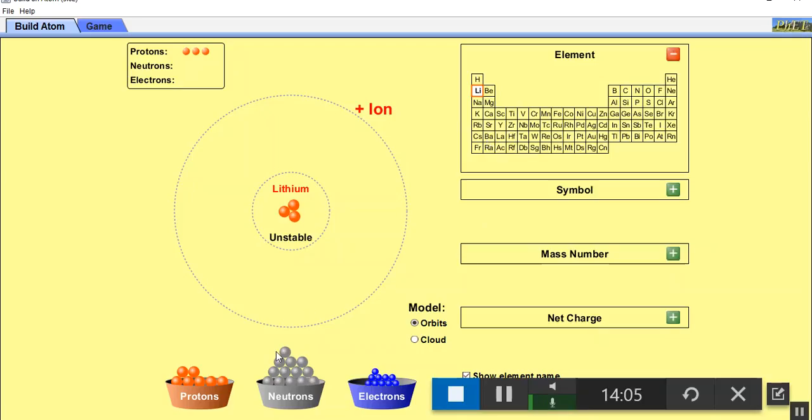If I add a neutron to lithium, notice I still have lithium. Still lithium. Still lithium. It tells me if it's stable or unstable. These are isotopes of each other. There's a stable lithium atom.